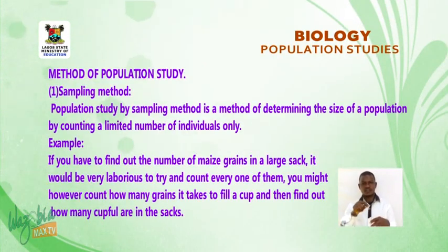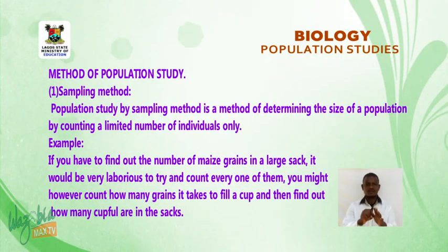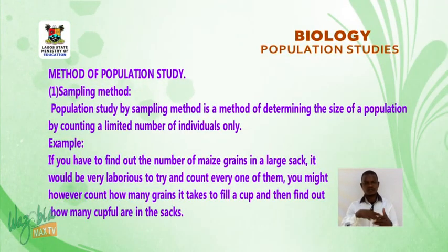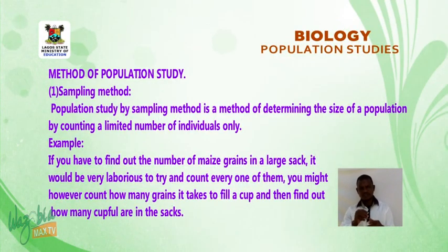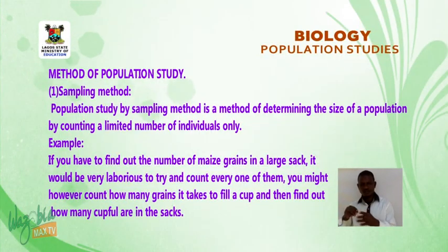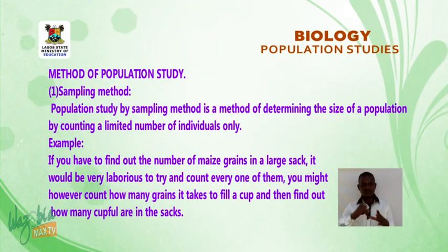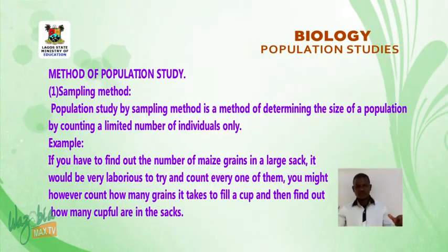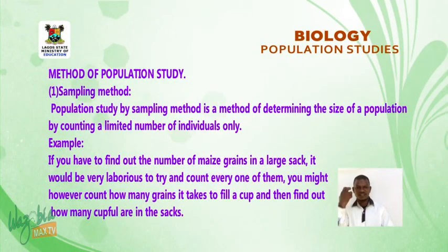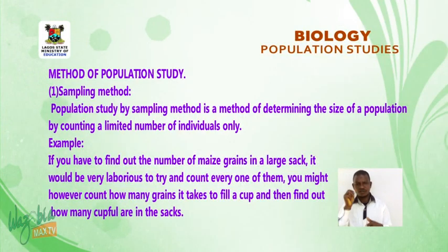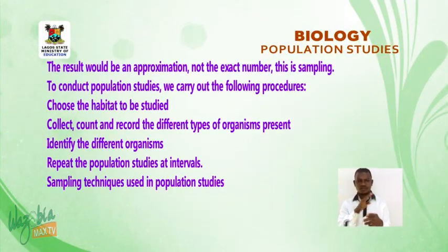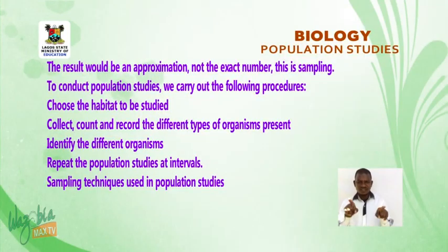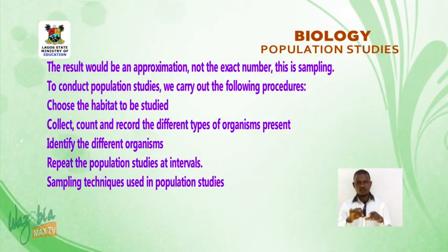Methods of Population Study — Sampling Method: Population study by sampling method is a method of determining the size of a population by counting a limited number of individuals only. For example, if you have to find out the number of maize grains in a large sack, it would be very laborious to count every one of them. Instead, you count how many grains fill a cup, then find how many cupfuls are in the sack. The result is an approximation, not the exact number — this is sampling.